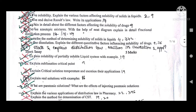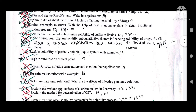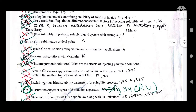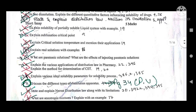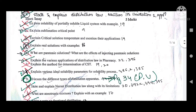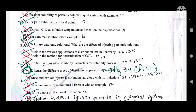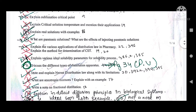Now for short essays of five marks: first, explain the solubility of a partially miscible liquid system with an example. Second, explain critical solution temperature and mention its applications. Third, explain real solutions with an example — a very important five-mark question. Fourth, what are paratonic solutions and what are the effects of injecting paratonic solutions? Fifth, explain the various applications of distribution law in pharmacy.